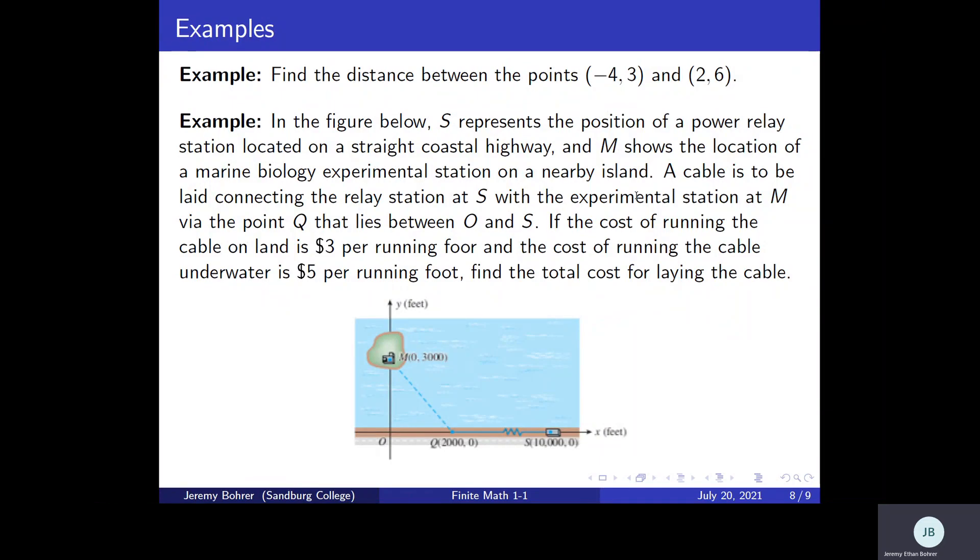Okay, so here's that other problem. In the figure below, S represents the position of a power relay station located on a straight coastal highway, and M shows the location of a marine biology experimental station on a nearby island. A cable is to be laid connecting the relay station at S with the experimental station at M via the point Q that lies between O and S. If the cost of running the cable on land is $3 per running foot and the cost of running the cable underwater is $5 per running foot, find the total cost for laying the cable.